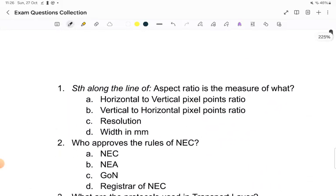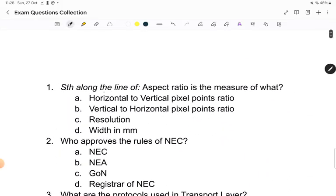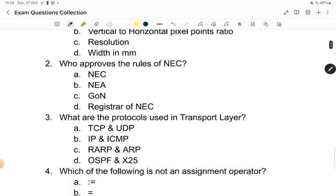First question that was asked was something along the line of aspect ratio is the measure of what, and the options were horizontal to vertical pixel point ratio, vertical to horizontal pixel point ratio, resolution, width in mm. So this is basically a drawing question. Second question that was asked was who approves the rule for NEC? NEC, NEA, Government of Nepal, and Registrar of NEC.